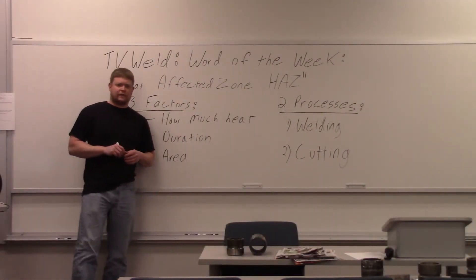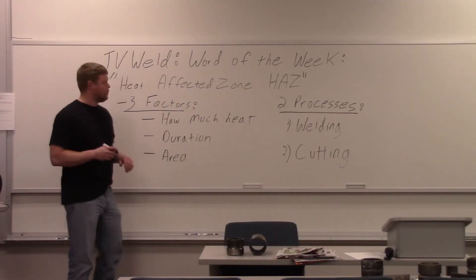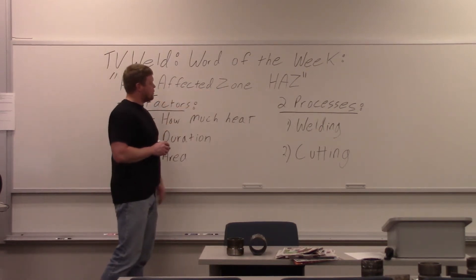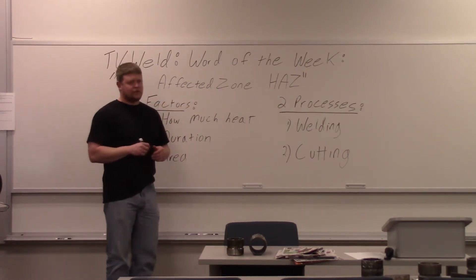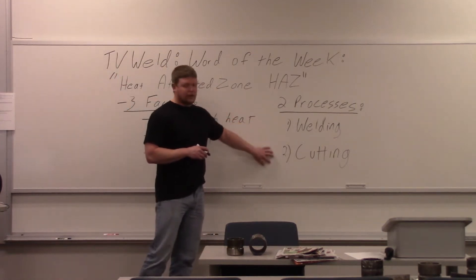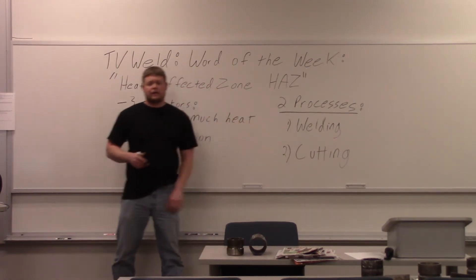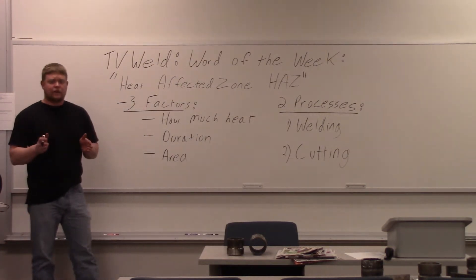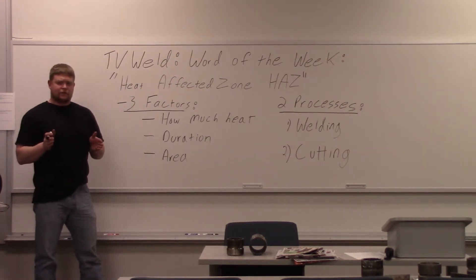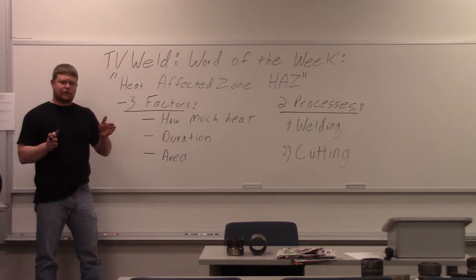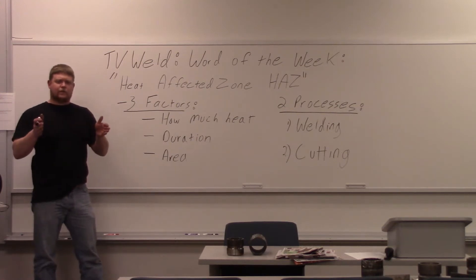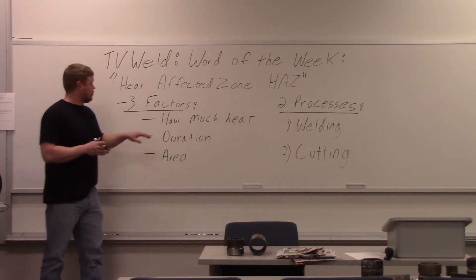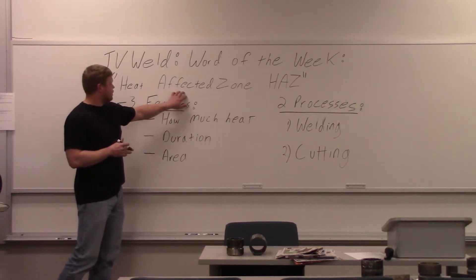The word of the week is heat affected zone, commonly shortened to HAZ. There are two processes that produce a heat affected zone: welding and cutting. It affects the edge of the weld or the edge of the cut — the heat affected zone starts right at the toe of the weld or the edge of the cut, and depending on the material, determines how far inward the zone extends. This is an extremely important term used in welding.